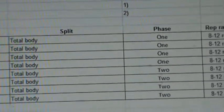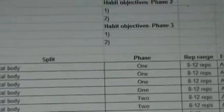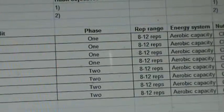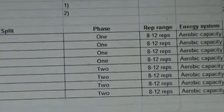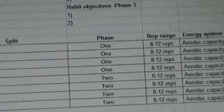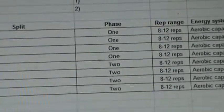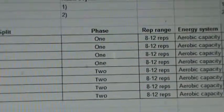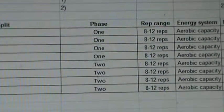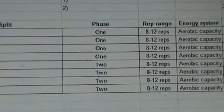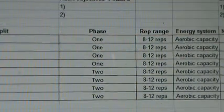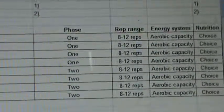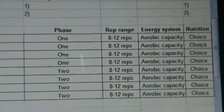We just kind of list out phase one weeks, phase two weeks, and then rep ranges. With the rep range, I'm going eight to 12 reps throughout this entire cycle. If I wanted to go heavier — if they were going into a strength phase for cycle two — maybe I'd go to four to six reps or six to eight reps. Whatever rep scheme you choose, you just plug that in, and that'll let us know what we need to put into their program.